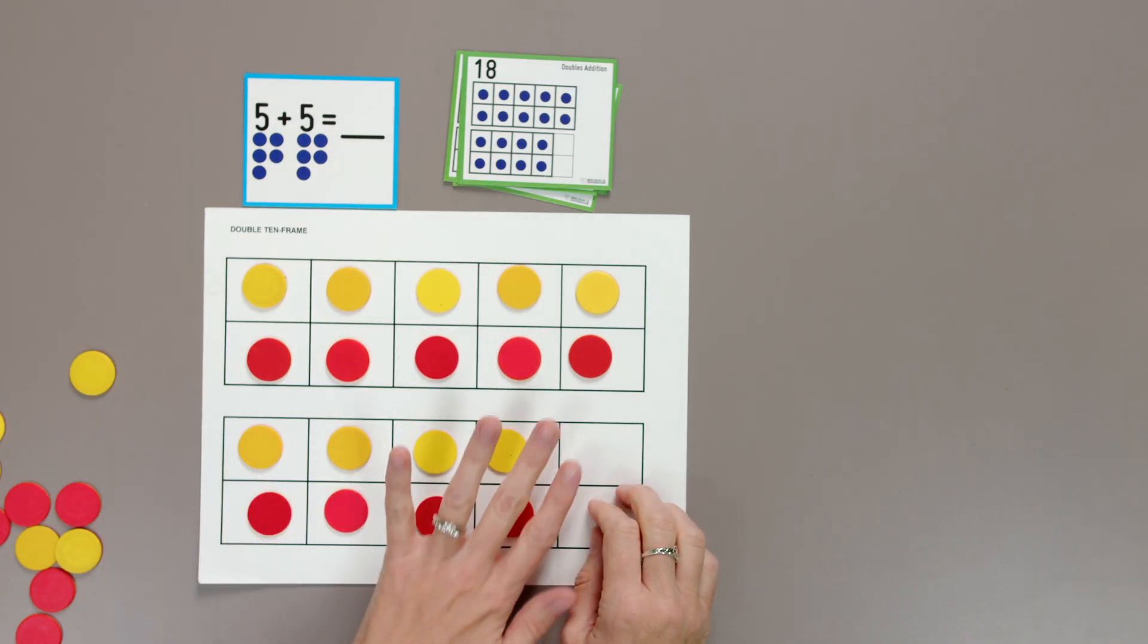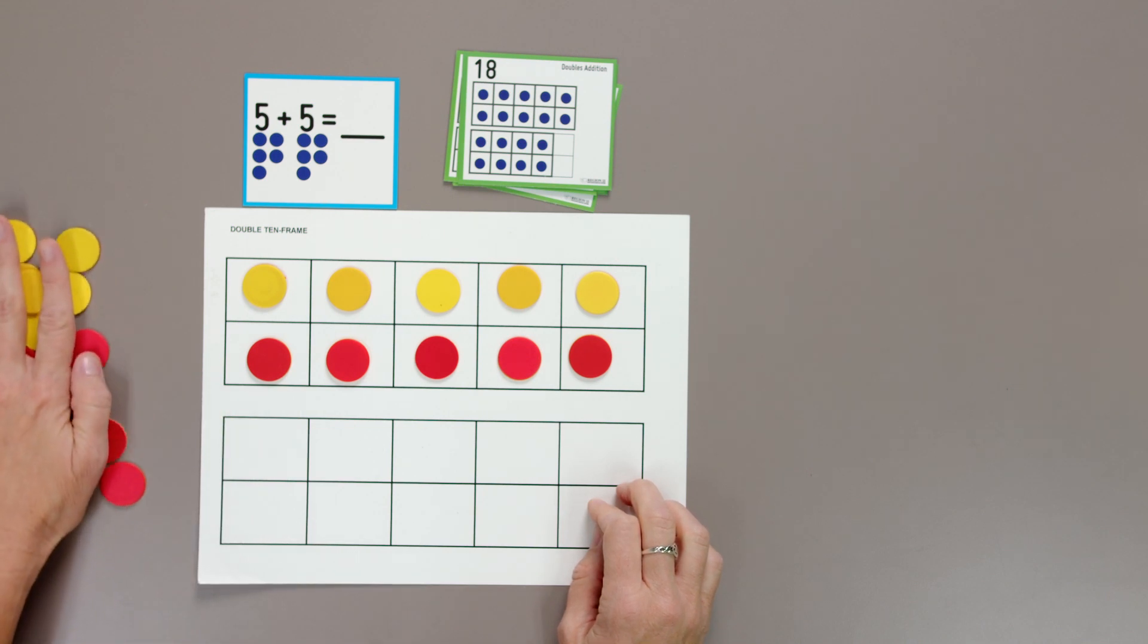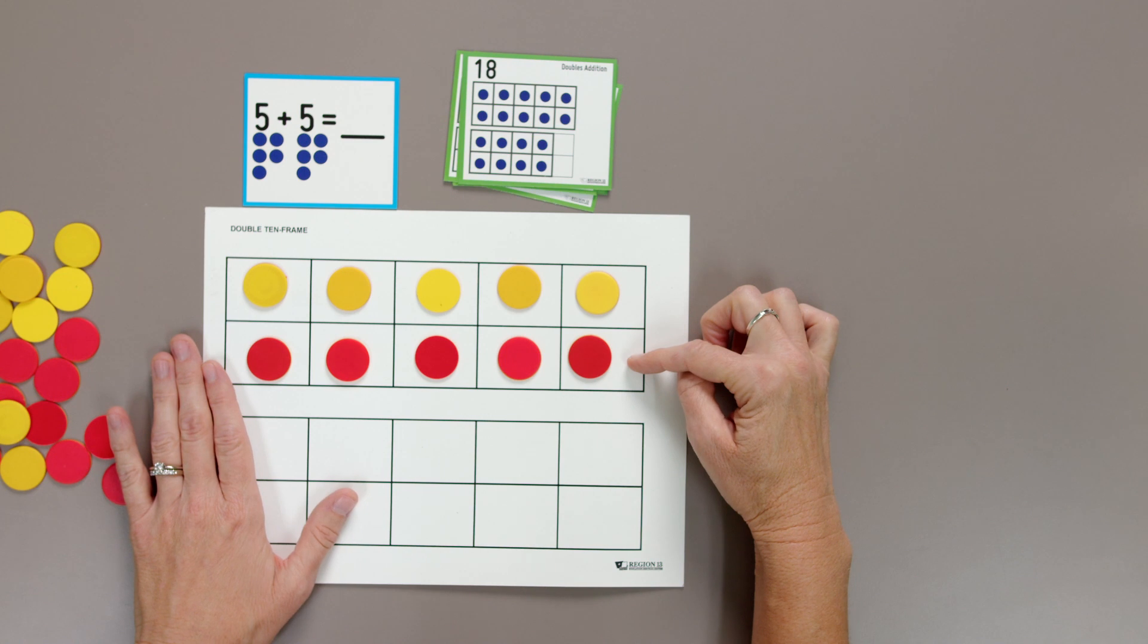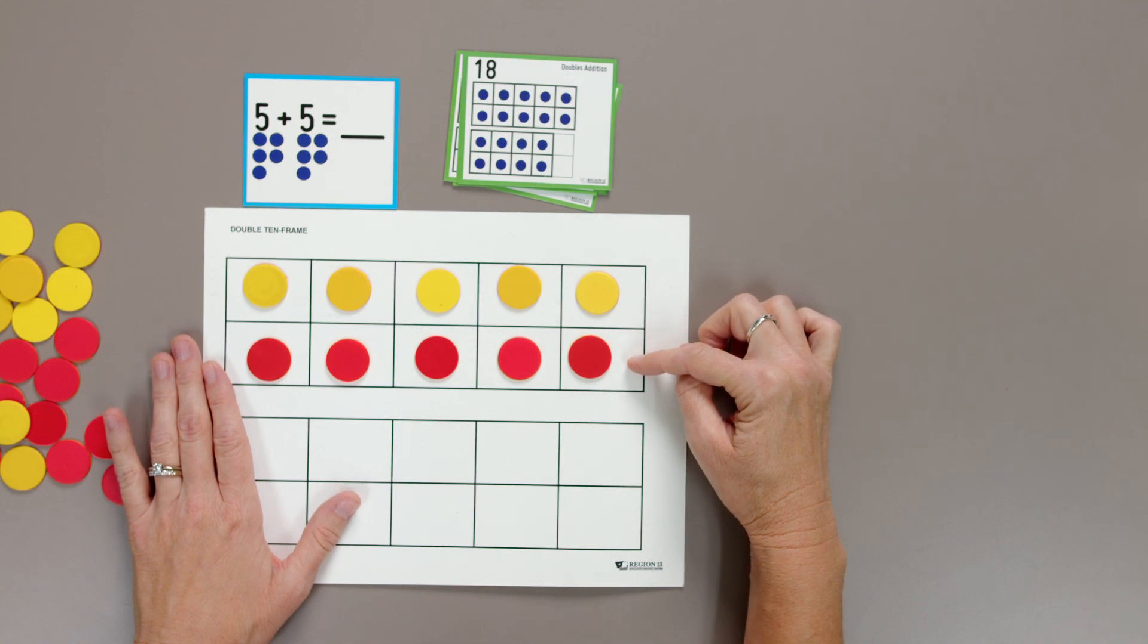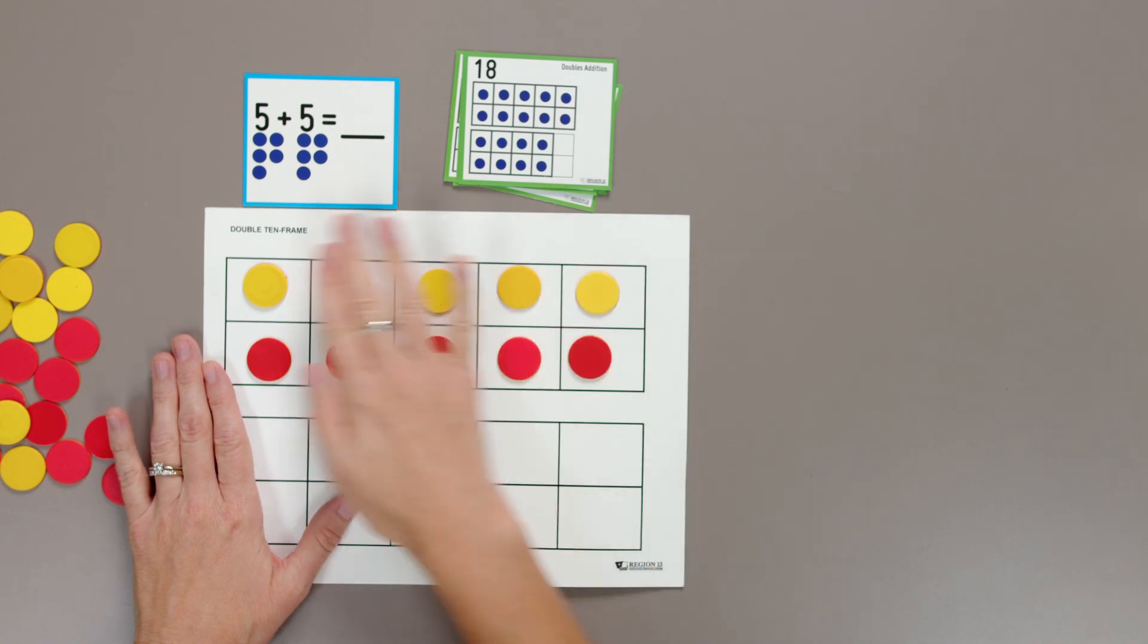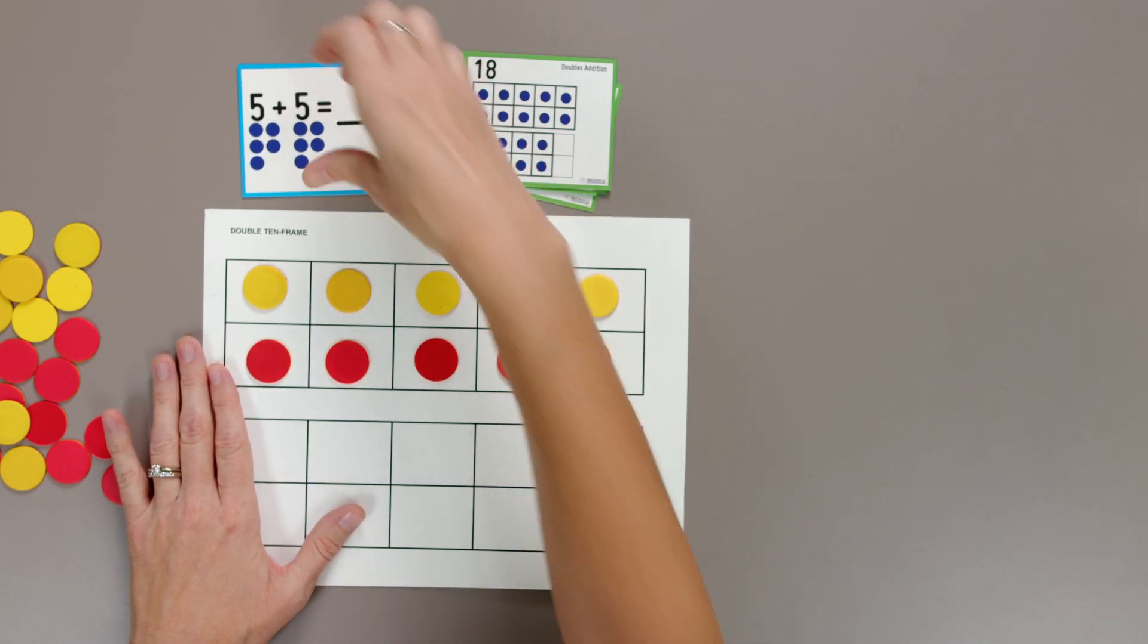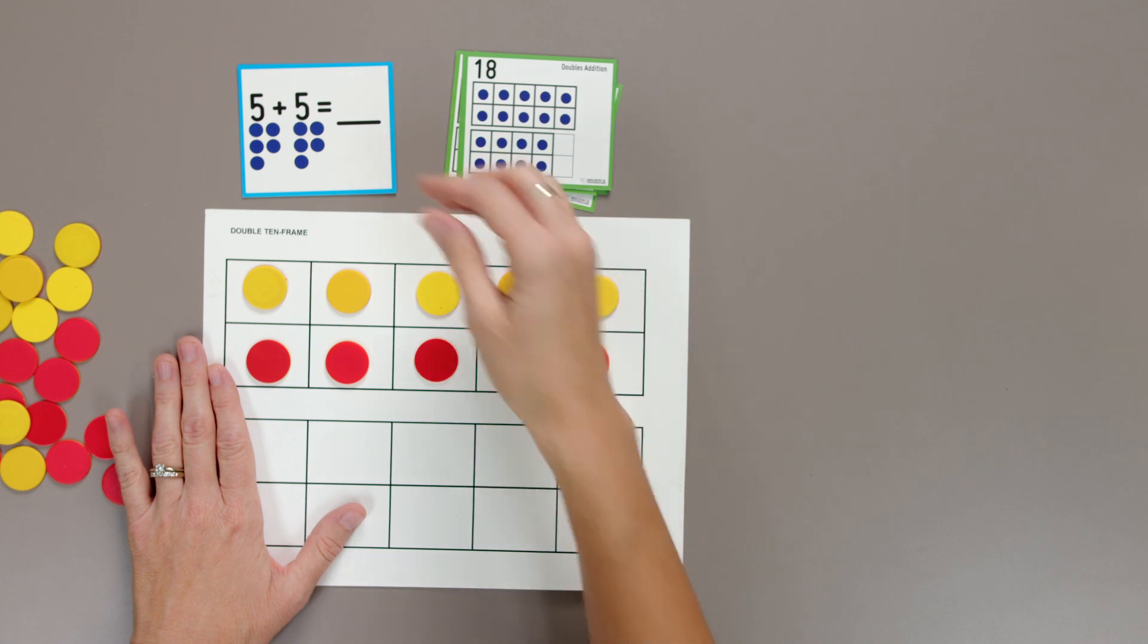Five plus five. Well, I don't need this bottom row because I have five yellow up top, five red down here. The second row. Five and five fills up my 10 frame. Five and five is 10. You know that. Is 10 even? Yes, it is.